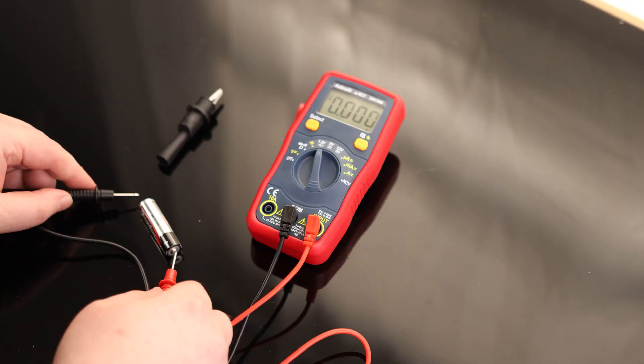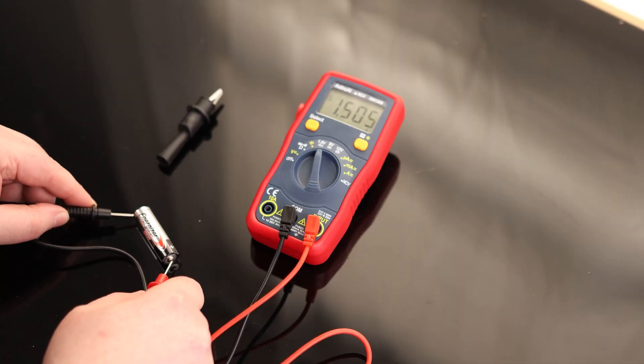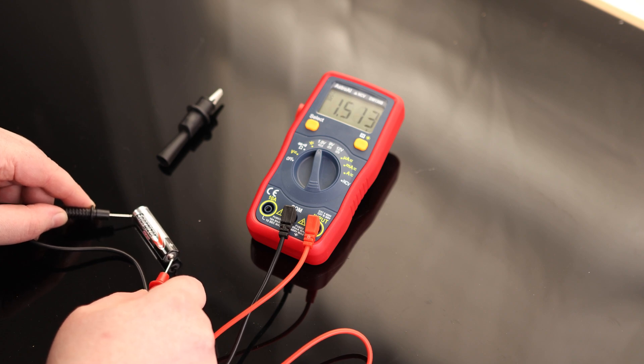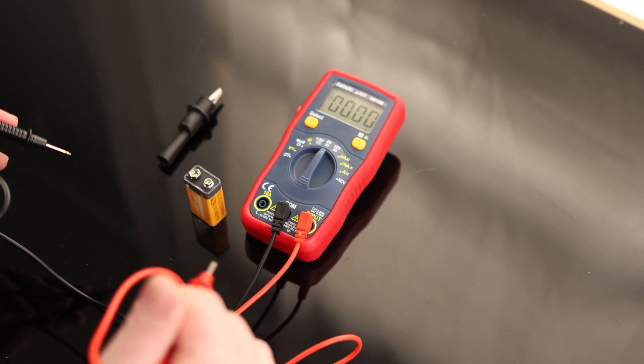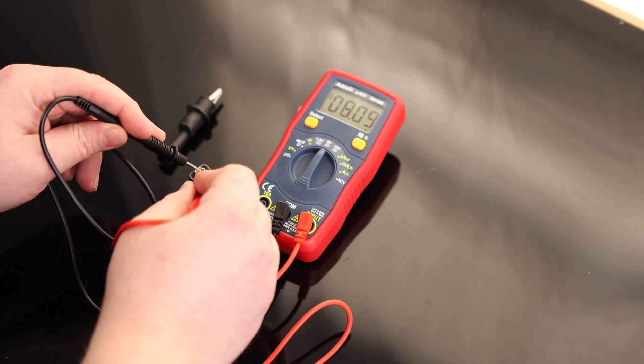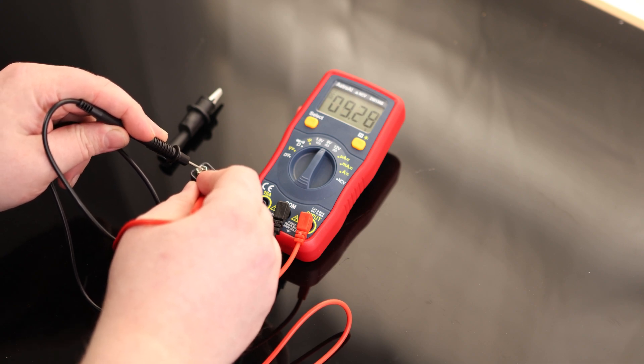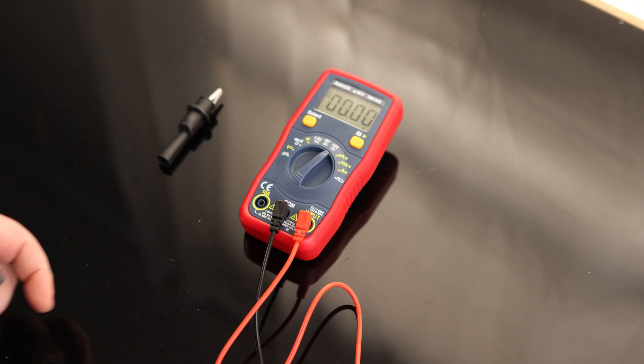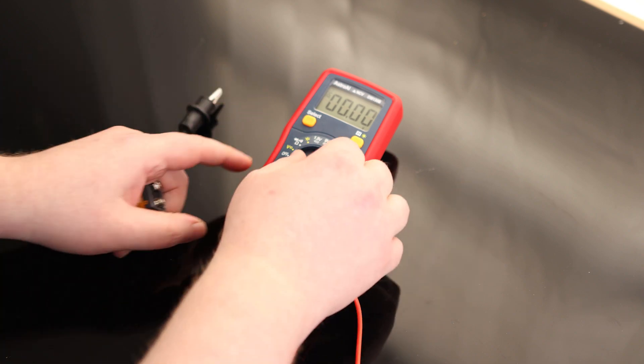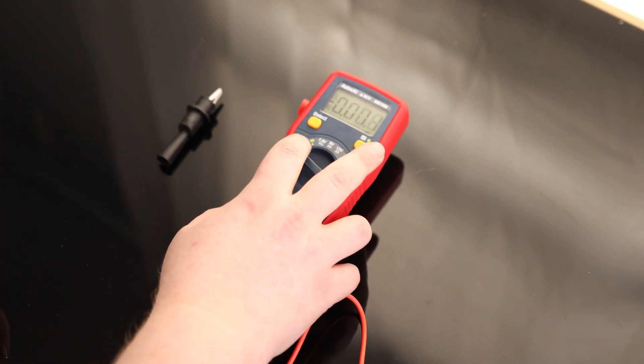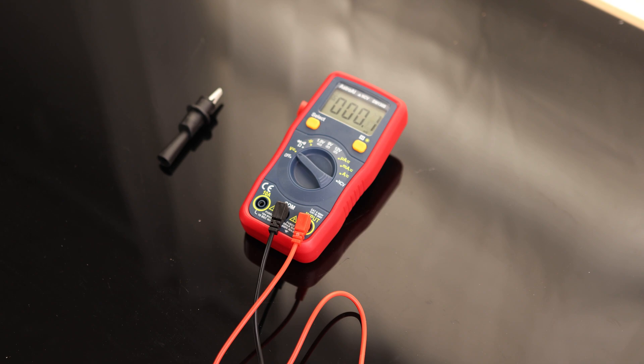So let's check a 1.5 volt. OK, it's saying 1.5. And if we check a 9 volt. 9.24 volts. Cool. So then 12 volts. Basically, if you're doing anything with your car, you can use that. Of course, I'd probably just be using this on DC and then use that. But yeah, it's really to each their own.